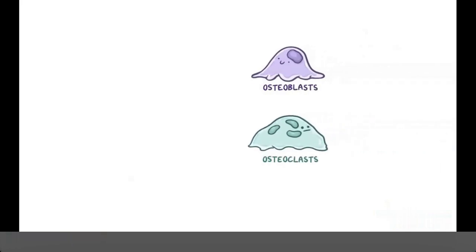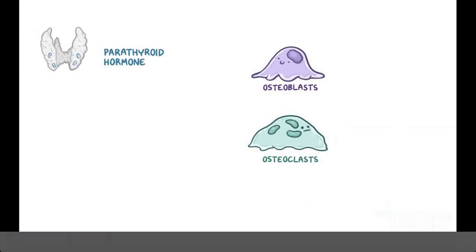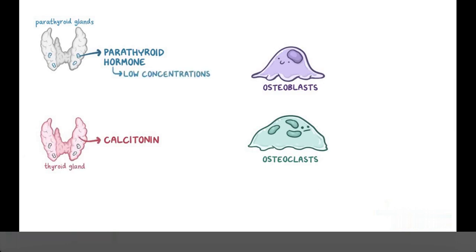Osteoblasts and osteoclasts are also controlled by two hormones: parathyroid hormone, which is released by parathyroid glands, and calcitonin, which is released by the thyroid gland. At low concentrations, parathyroid hormone works by stimulating the activity of osteoblasts, which promotes bone formation, while at high concentrations, parathyroid hormone stimulates bone resorption. On the other hand, calcitonin works by inhibiting osteoclast activity, which decreases bone resorption.